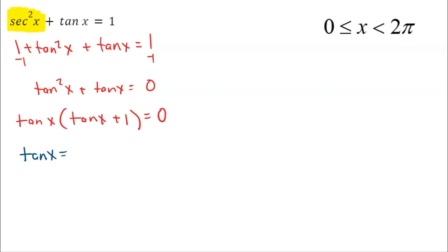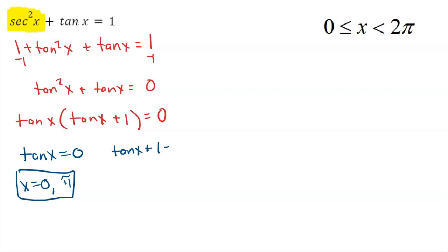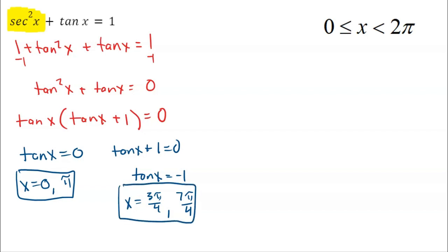Tangent of x could equal 0 — that's going to happen at 0 and π. Where is tangent of x plus 1 equal to 0? That means tangent of x equals negative 1. Where is tangent equal to negative 1? That's going to happen at 3π/4 and 7π/4, in quadrants 2 and 4. So I have four answers to this equation: 0, π, 3π/4, and 7π/4.